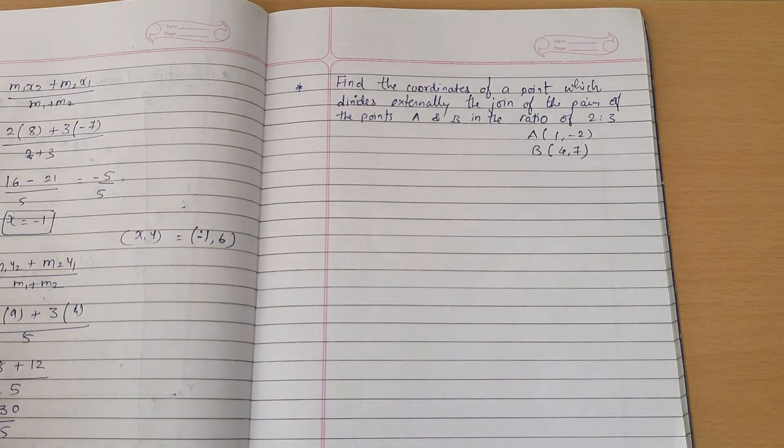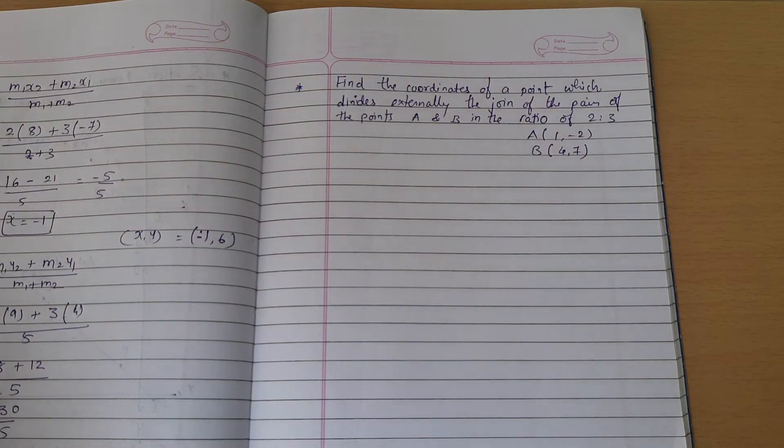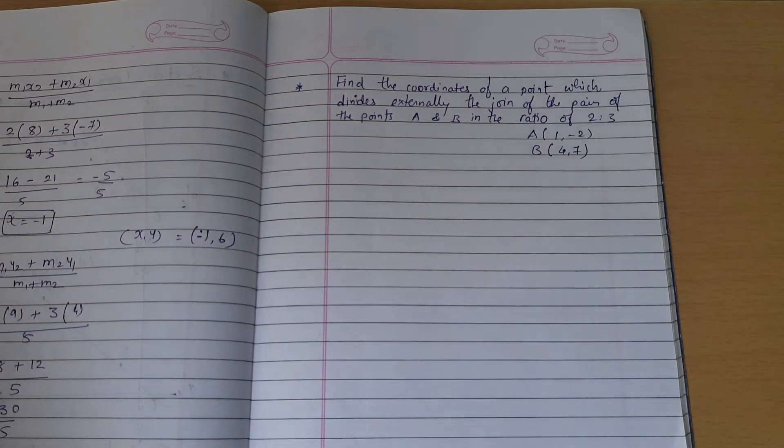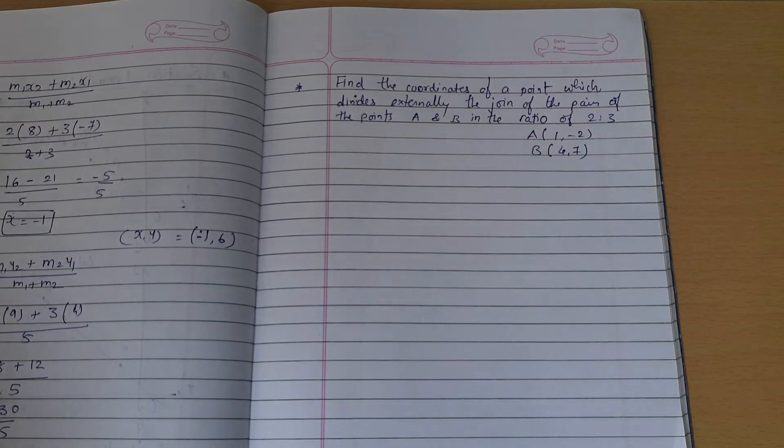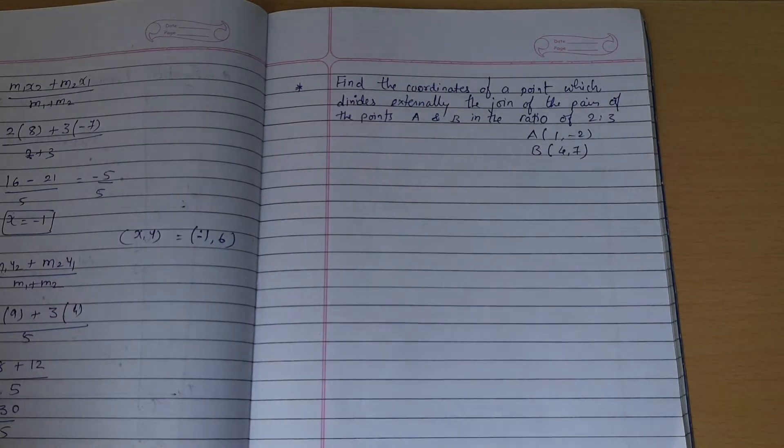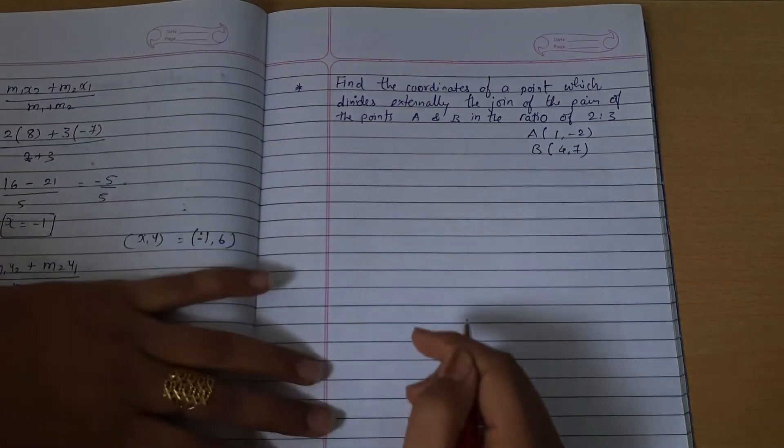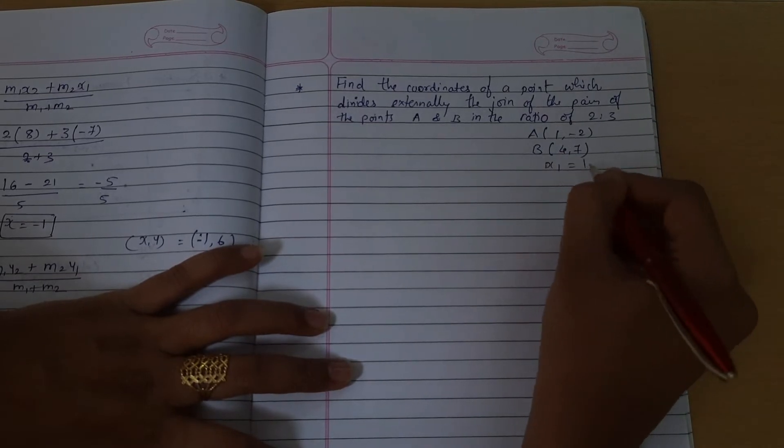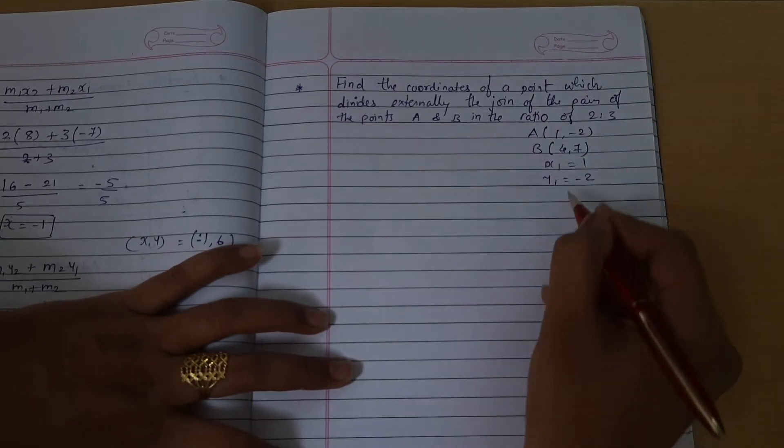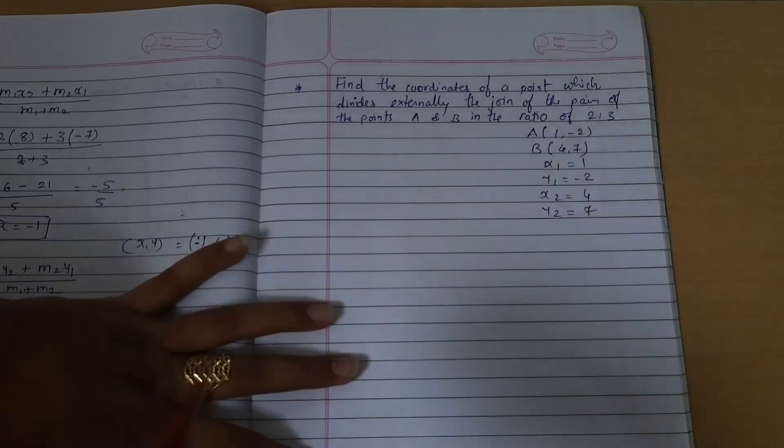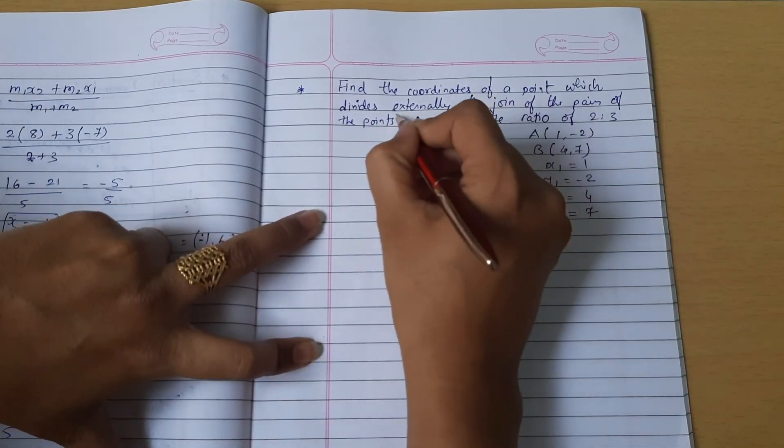Another example: find the coordinates of a point which divides externally the join of the points A and B in the ratio of 2:3. We need to find the coordinates. Both coordinates are given: x1 equals 1, y1 equals minus 2, then x2 equals 4 and y2 equals 7.